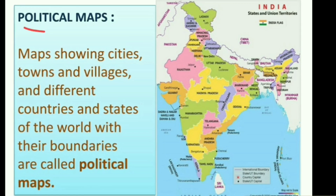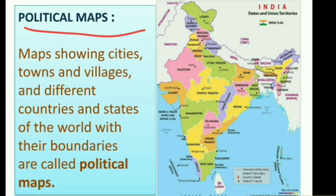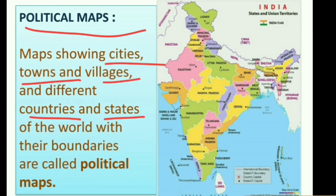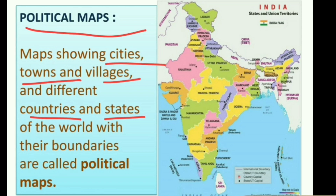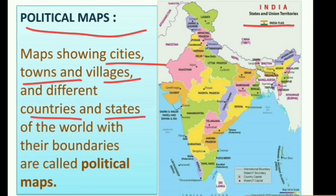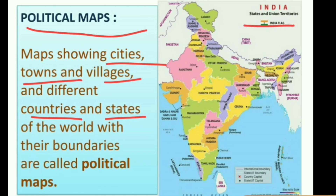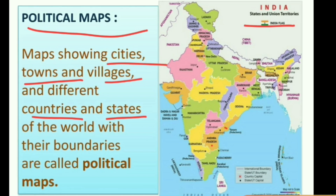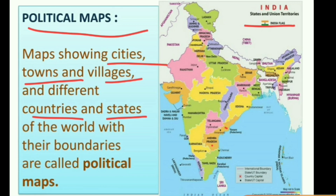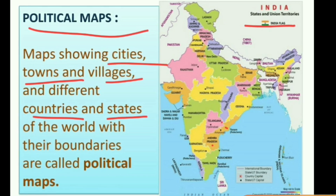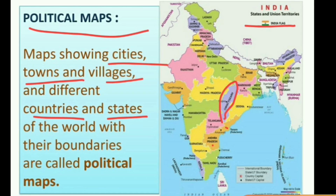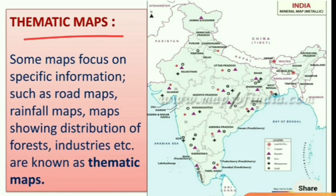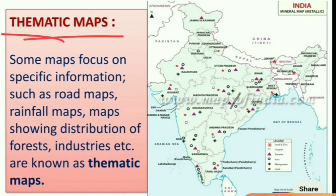The second type is the political map. In political maps, all the cities, towns, villages, countries and states along with their boundaries are marked. In the map shown here, all the different states and union territories and their capitals are marked with their boundaries. For example, Andhra Pradesh is shown and its capital Amaravati is marked. In this way all states, union territories and their capitals with boundaries are shown — this is called a political map.